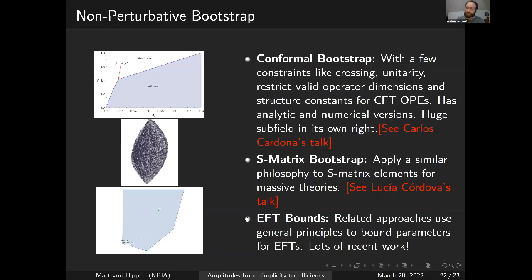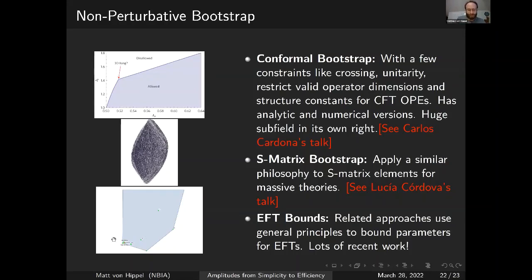Finally, as a related method, you can use the same philosophy to restrict the coefficients of operators in an effective field theory. You're constraining tree amplitudes expanded with some coefficients, imposing causality, positivity, and consistency with quantum gravity — trying to figure out what's allowed. There's something called the EFT-hedron, yet another hedron, that contains various known theories like string theory near its corners.